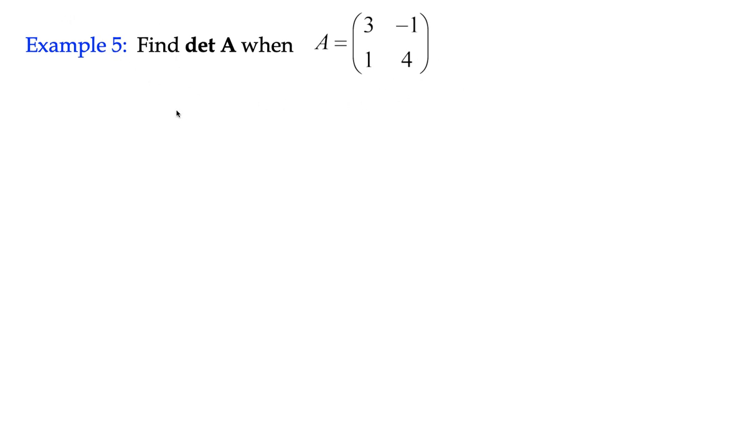So we can say the determinant of A is equal to 3 multiplied by 4, subtract negative 1 multiplied by 1,